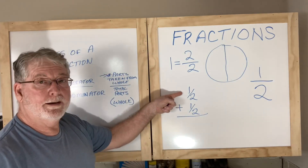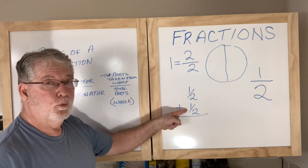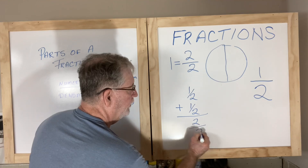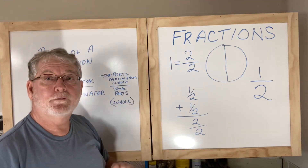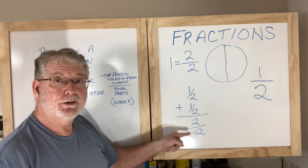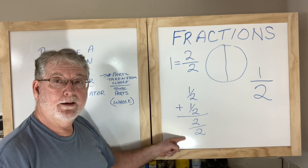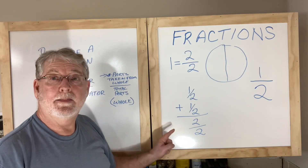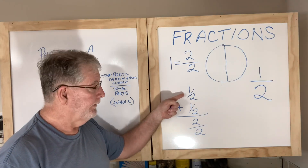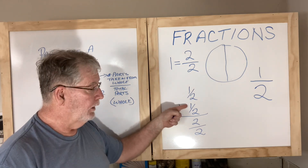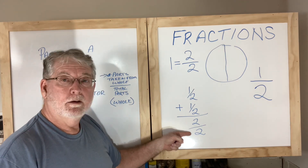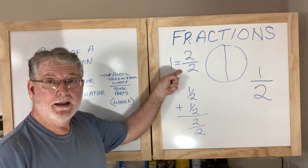So if I add one half plus one half, that equals two over two. When you add fractions with the same denominator, it's very simple: the denominator stays at the bottom. The only thing we add is the numerator — one plus one equals two. So we have two over two, which, as we showed earlier, equals one.